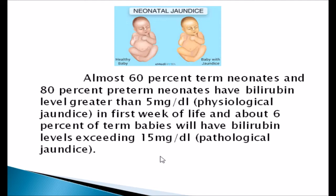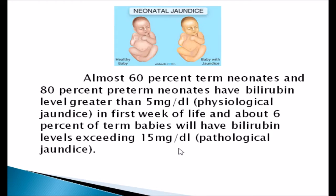Almost 60% of term neonates and 80% of preterm neonates have a bilirubin level greater than 5 mg/dL, which is called physiological jaundice, in the first week of life. About 6% of term babies will have bilirubin levels exceeding 15 mg/dL, which is called pathological jaundice — this is very rare. In physiological jaundice the bilirubin level is within 5 to 15 mg/dL, whereas in pathological jaundice it exceeds 15 mg/dL.